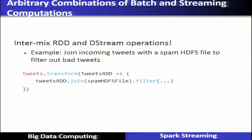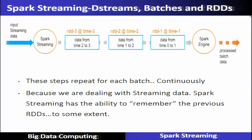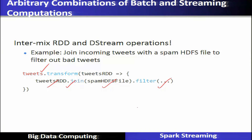Arbitrary combination of batch and stream computation: there will be an intermix of RDD and DStream computation operations. For example, join an incoming stream with a spam HDFS file to filter out bad tweets. The tweet RDDs are joined with the HDFS file system, a filter is applied, and the transformed tweets are given as output. These functions are written in Scala to understand these operations and programs.